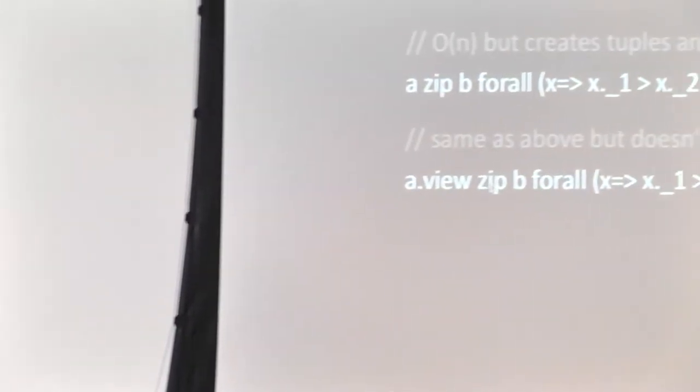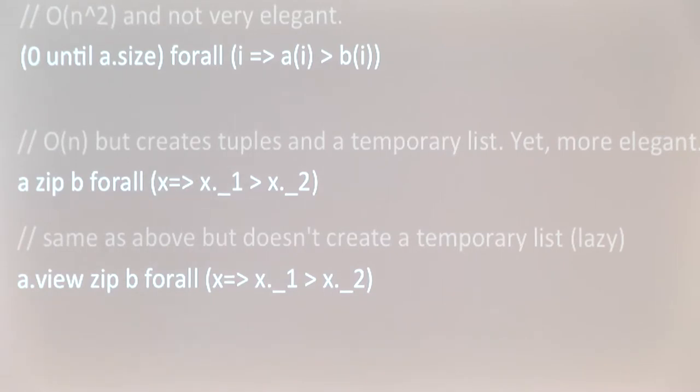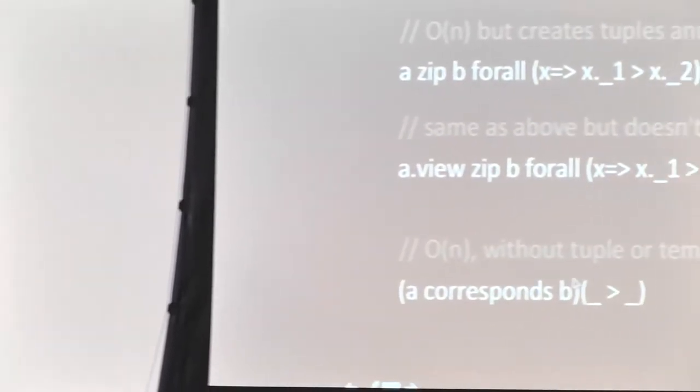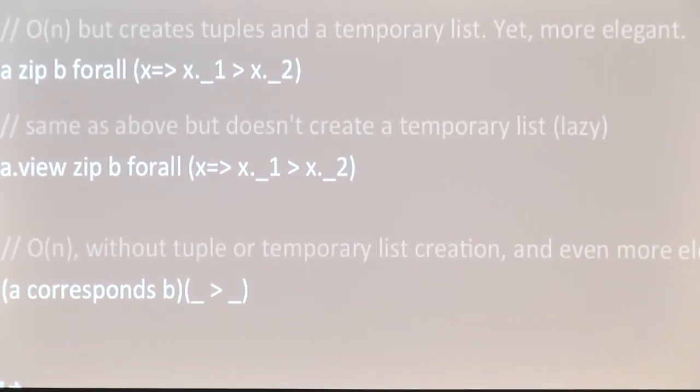Using view on zip avoids creating the temporary list, but we still allocate tuples. To avoid tuple allocation entirely, we can use the corresponds function. Corresponds has two iterators and advances them in tandem, calling the provided function for each corresponding pair of elements without actually creating pair objects. This is the most elegant and efficient solution. When one collection is shorter, zip will truncate to the shorter length, and corresponds similarly checks only up to the minimum size.